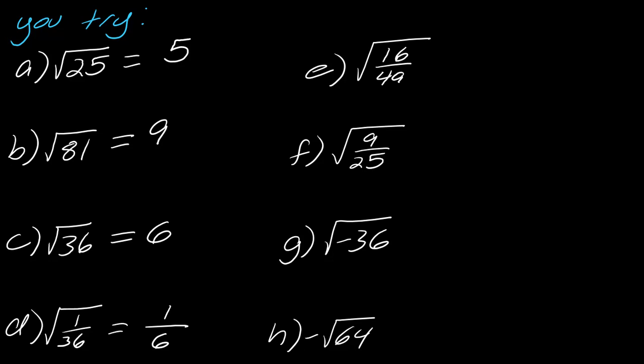For E, the square root of 16 over 49, the square root of 16 is 4, and the square root of 49 is 7, so this would just be 4 over 7. And then for F, the square root of 9 is 3, and we already know that the square root of 25 is 5.